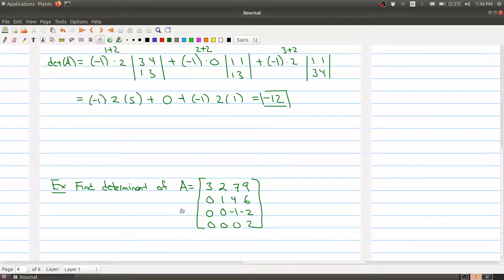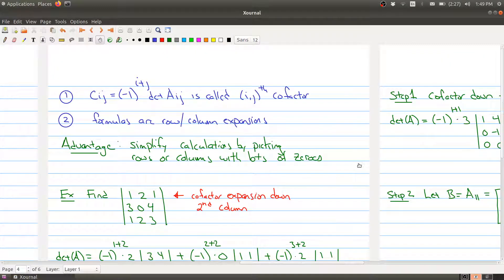We have a matrix with lots of zeros and what we learned is we should pick a row or a column that has lots of zeros and do our expansion along that since it will simplify our calculation. Obviously a good choice would be the first column or the last row. It doesn't matter which one you pick, you always get the same answer.